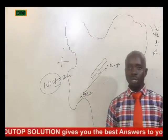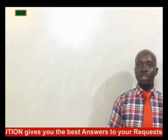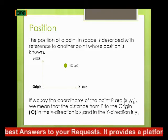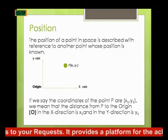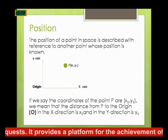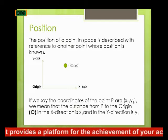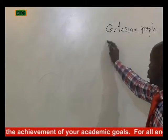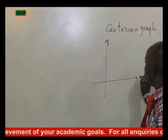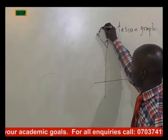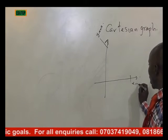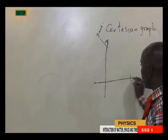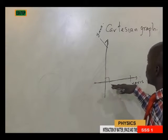Let's go to position. What is position? The position of a point in space is described by referring to another point whose position is known. Let's look at position in terms of a Cartesian graph. A Cartesian graph is a graph between a vertical line — the y-axis — and a horizontal line — the x-axis — where both lines are perpendicular to each other.